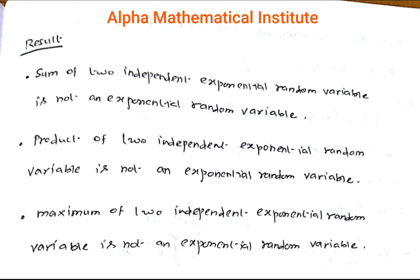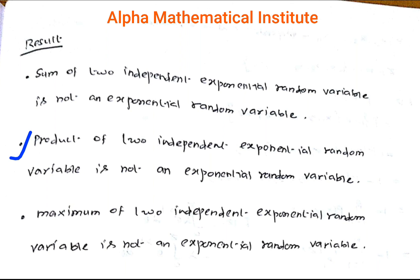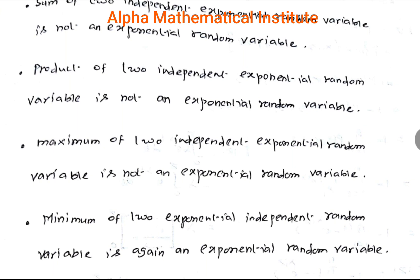This is the first result: the sum of two independent exponential random variables is not an exponential random variable. Using this fact, we can discard the first option. The second result says that the product of two independent exponential random variables is not an exponential random variable. Using this fact, we can discard the second option.